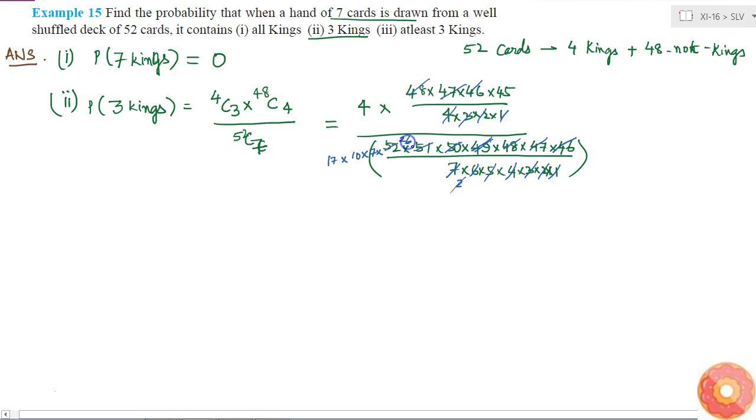So I write it as 45 times 4 divided by 17 times 10 times 7 times 26. Can I cancel anything more?